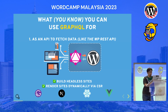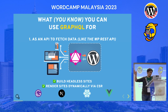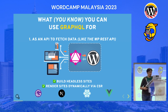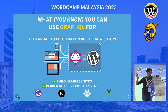So what do you know that you can use GraphQL for? You can use it as an API to fetch data, like the WP REST API. Basically you have a WordPress site and you expose your data using either the WP REST API or GraphQL, which is an alternative, and you can fetch the data from the server. That allows you to build headless sites or to render the sites dynamically with client-side rendering — using Gatsby, Next.js, React, or Vue. This is the part that you might already know.